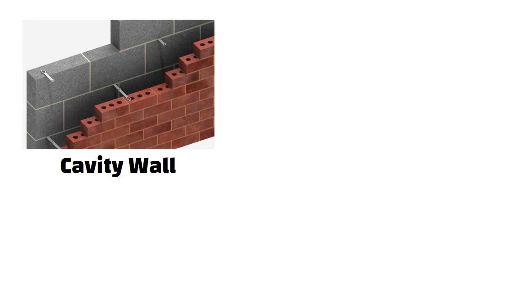Hello friends. A cavity wall in construction refers to a type of wall built with two separate layers or leaves of masonry or brickwork with a gap, that is cavity, between them.